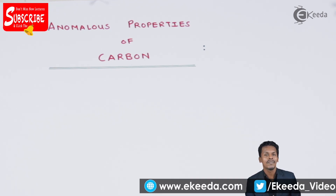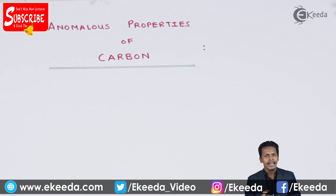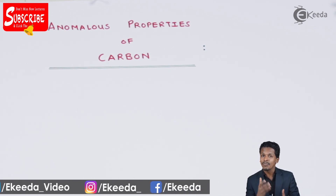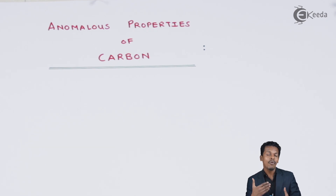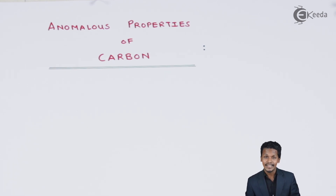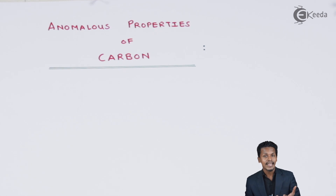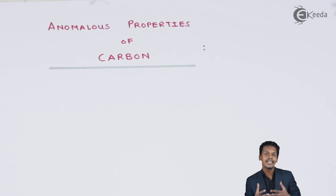Carbon has a tendency of catenation. Talking about bond enthalpy, since the bond enthalpy of carbon is more, it forms various bonds with other carbon atoms, and breaking those bonds is very difficult. This is related to catenation. The next property is multiple bonds. The group 14 elements don't form double bonds except carbon. As discussed in chapters on alkenes, alkynes, and alkanes, carbon can form carbon-carbon double bonds as well as carbon-carbon triple bonds.